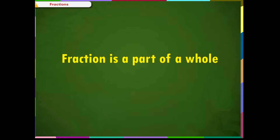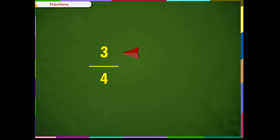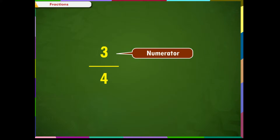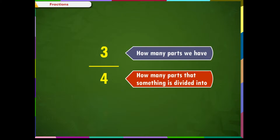We know that a fraction is a part of a whole. For example, when we divide a biscuit into four equal parts, we call each of these parts a fraction of the whole biscuit. A fraction is denoted by two numbers — one above and one below — separated by a horizontal line. The top number is called the numerator and the bottom number is called the denominator. The denominator means how many parts something is divided into, and the numerator means how many parts we have.